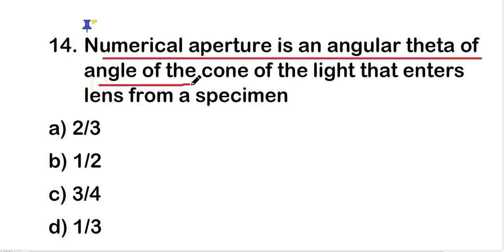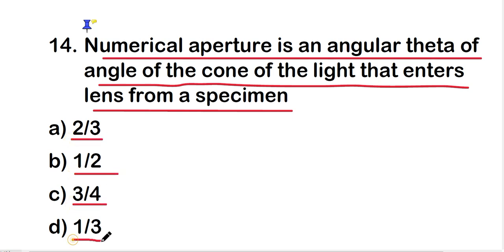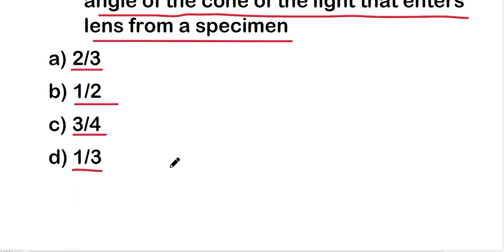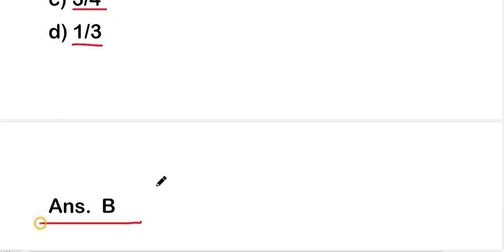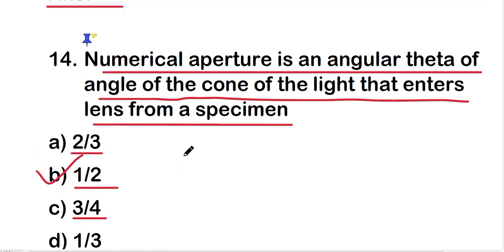Numerical aperture is the angular measure of the cone of light that enters a lens from a specimen. The cone angle theta is what fraction — 2/3, 1/2, 3/4, or 1/3? The right answer is option B — 1/2. Numerical aperture is defined as n sine theta, where n is the refractive index of the medium.